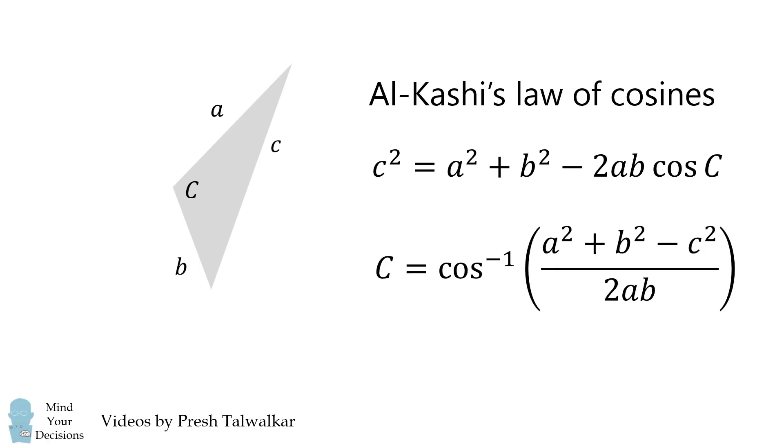Next, if we have a triangle with sides a, b, and c, we can solve for the angle c opposite side c using Al-Kashi's law of cosines. The angle c will be the inverse cosine of a squared plus b squared minus c squared all over 2ab.